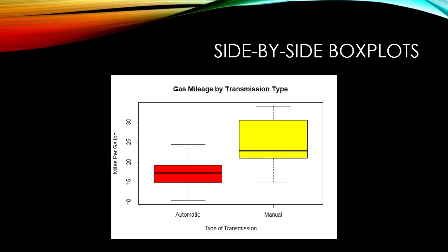The transmission variable, which is categorical, is related to the gas mileage variable, which is quantitative. All right, let's take a look at how I created this box plot.